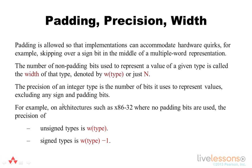The number of non-padding bits used to represent a value of a given type is referred to as the width of that type. It may be denoted by this notation, the width of the type, or just by the letter N.